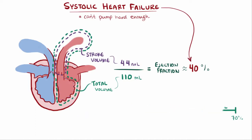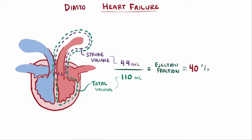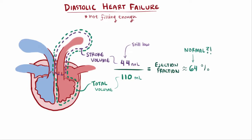In addition to systolic heart failure, you've also got diastolic heart failure, where the heart's squeezing hard enough but not filling quite enough. In this case, the stroke volume is low, but the ejection fraction is normal. Because it's not filling enough, there's a low total volume — say about 69 milliliters. Even though both are low, 44 milliliters divided by 69 milliliters is still 64%.